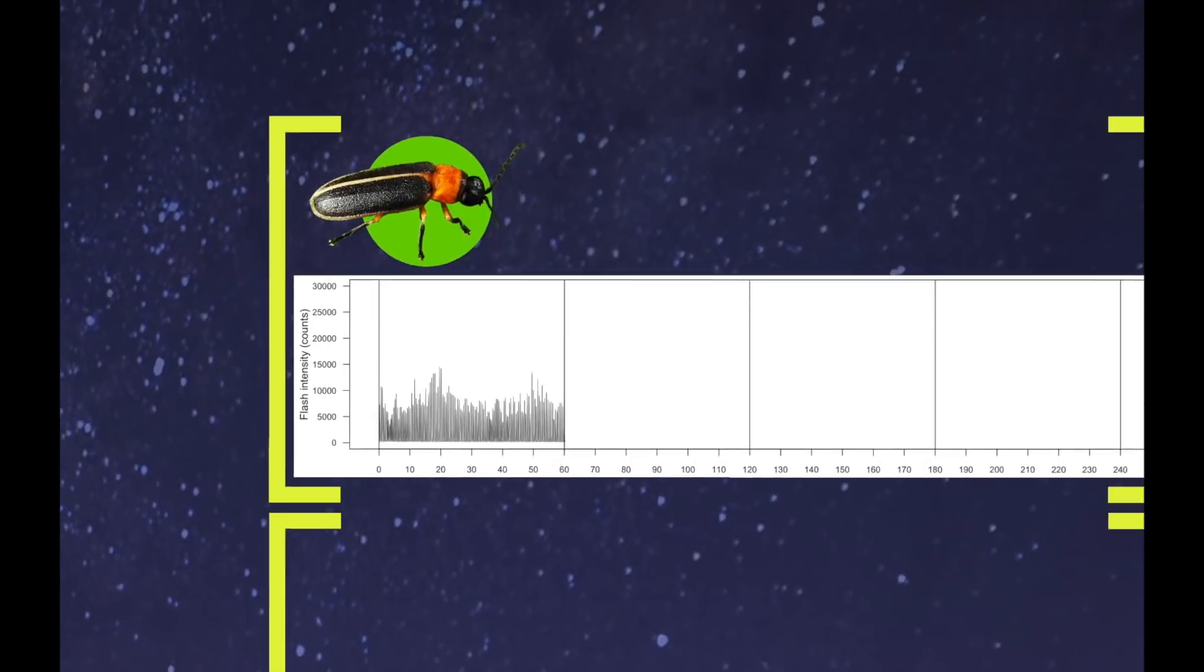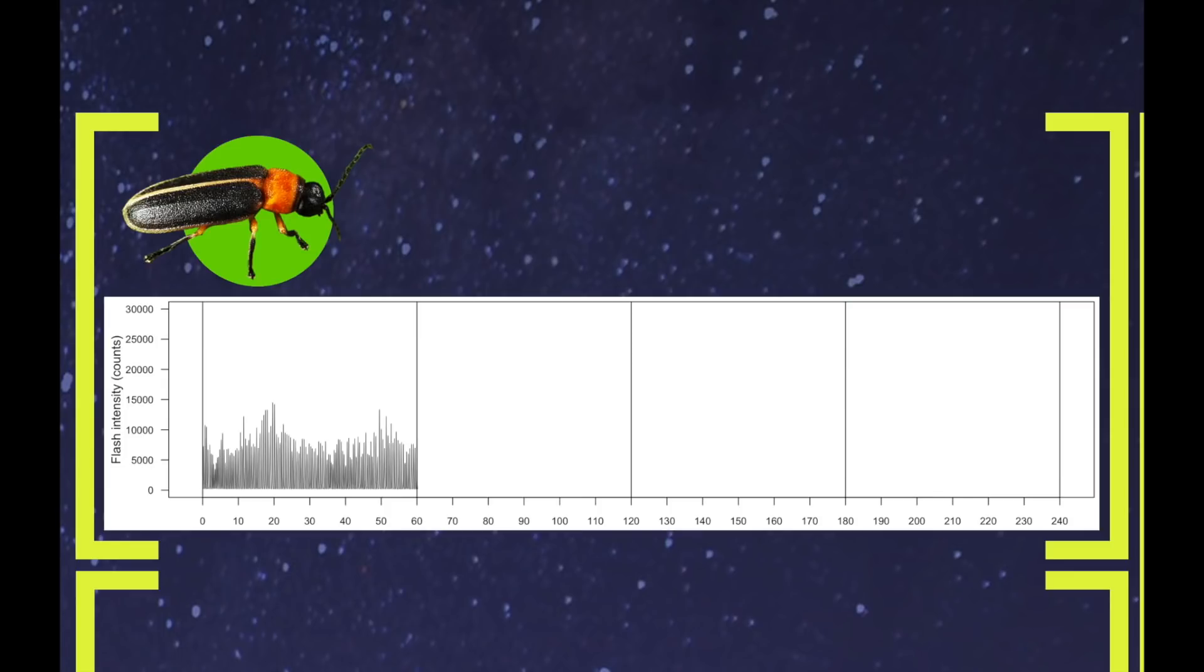So here is what I found. This is a recording from one male. The x-axis is time. So this is kind of like an EKG. Over time, you see the line bouncing up and down. And the bounce is the flash. And the height of each line is the intensity of the flash. So for the first 60 seconds, you see the fireflies flashing away. Flash, flash, flash. It's pretty fast. He's pretty annoyed.